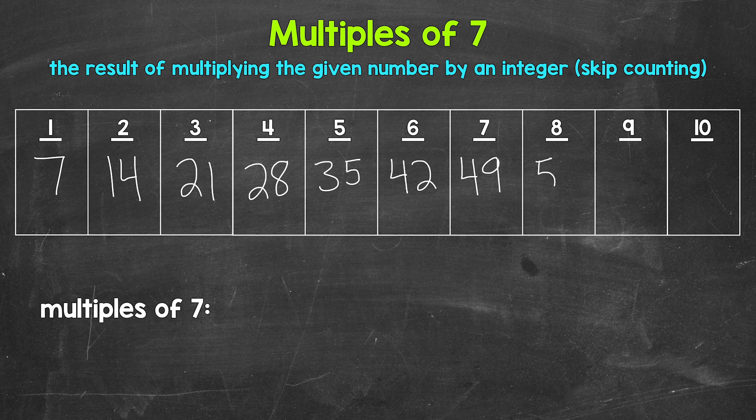Eight times seven is 56. Nine times seven is 63. And 10 times seven is 70.